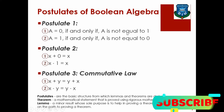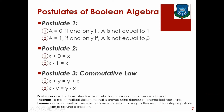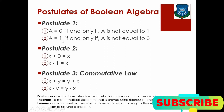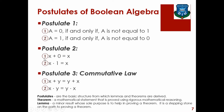When a is equal to 0, then a-bar is 1. When a is equal to 1, then a-bar is 0. So if a equals 1, then a-bar equals 0; and if a equals 1, then a-bar is 0.